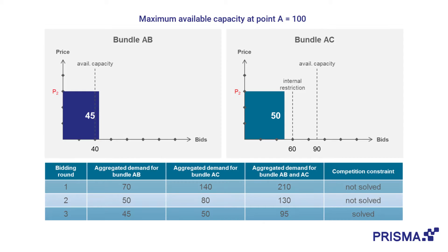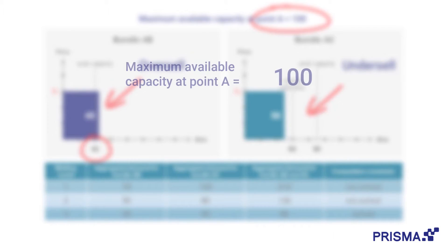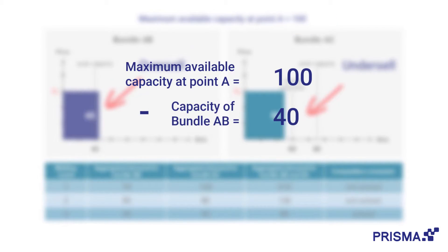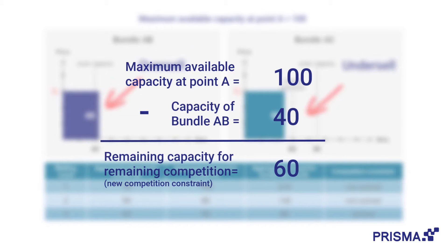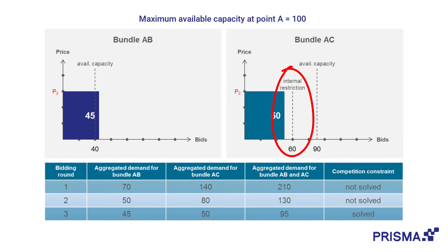Now, in the third round, things change. The combined capacity is now less than the competition constraint, so the two auctions will proceed in two different directions. Since it is now apparent that the relative demand for bundle AB is higher than for bundle AC, bundle AB will get the total 40 capacity of the available 100 at entry point A, and the remaining 60 capacity are set as the internal restriction for the auction at bundle AC.